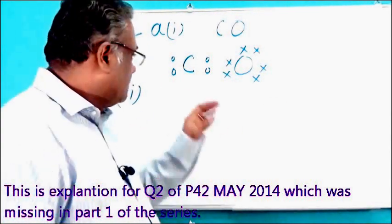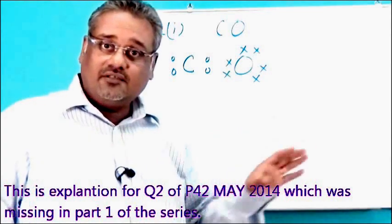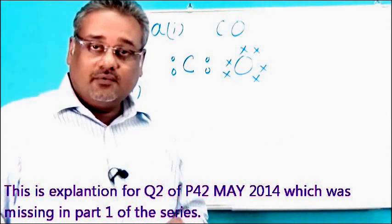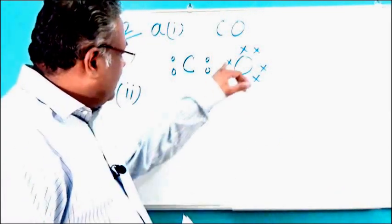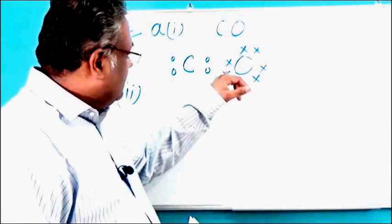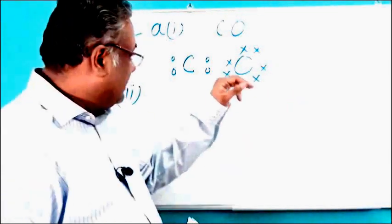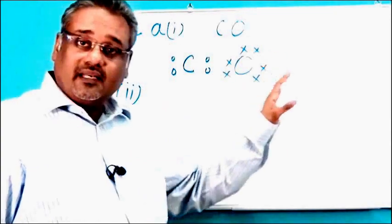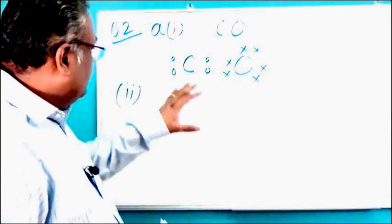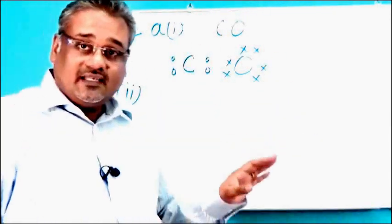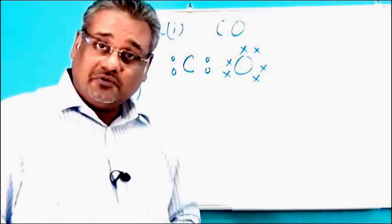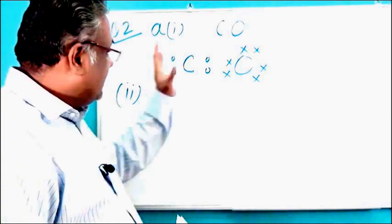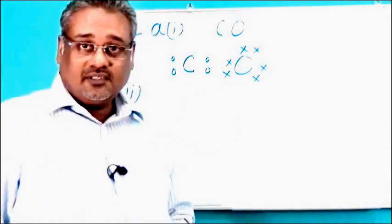Carbon basically has 4 electrons in the outer shell and oxygen has 6. So the best dot-cross diagram you could come up with will actually satisfy the requirement for the oxygen. It needs 2, so it takes 2 electrons for carbon to make it equal to 8. But obviously carbon is not fulfilling its octet, but not all molecules do, so there is nothing else to worry about. This is the accepted dot-cross diagram for carbon monoxide.